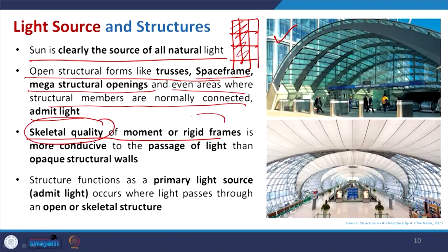The skeletal quality of a rigid frame is more conducive to the passage of light than opaque structural walls. In high-rise structures, to make them resilient to lateral loads using shear walls — which are very solid and opaque — will protect structurally but also block the view. Alternatively, going with some frame or super frame may really help. We will be discussing high-rise structures in upcoming lectures of this course, where we will see how to make high-rise buildings structurally resilient to lateral loads without compromising openings to the outside.